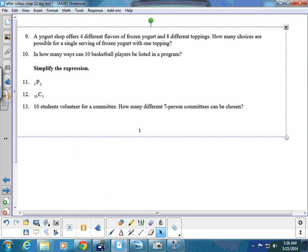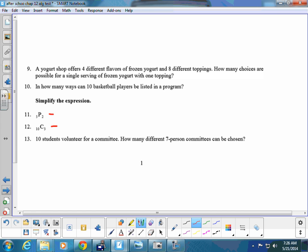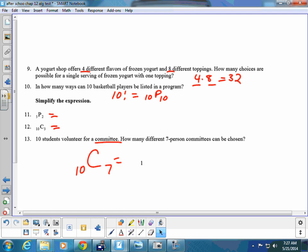Moving along to, these ones are quick questions here. You could do this on your calculator. This one here, I skipped this one here. 4 flavors, 8, so this is just 4 times 8, which is 32. How many ways could 10 basketball, this is 10 factorial, or 10P10. And students volunteer for the committee. How many seven different person committees? So we're looking at committees. That's C, 10C7. And again, you can use your calculator to figure that out. These two are calculator questions.